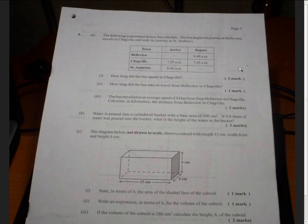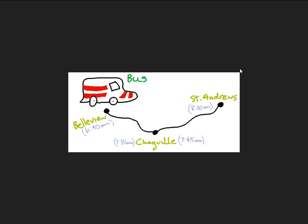I think a diagram would help us see the information contained in the table a lot better, so let's move on over to that diagram. Here's the diagram with all the information from the table presented in a friendlier way. At Bellevue we leave at 6:40 a.m., we arrive at Shackville at 7:35 a.m., we depart Shackville at 7:45 a.m., and we arrive at St Andrews at 8:00 a.m.